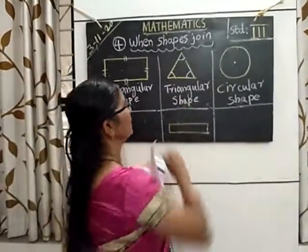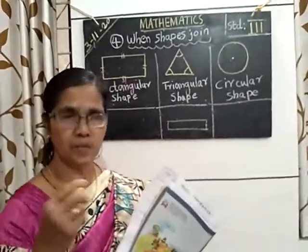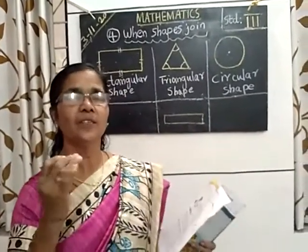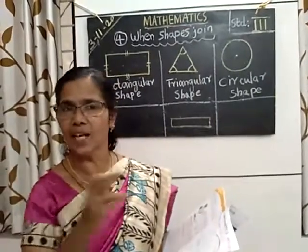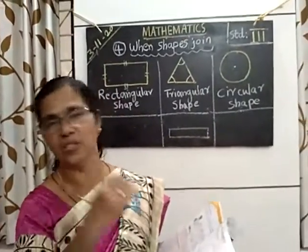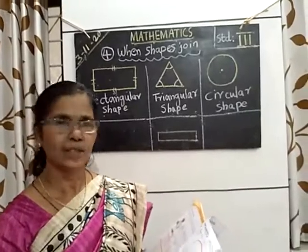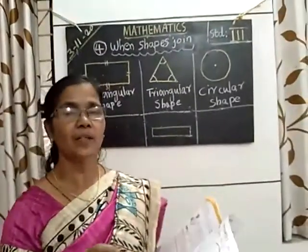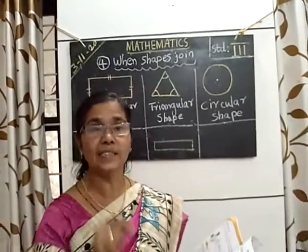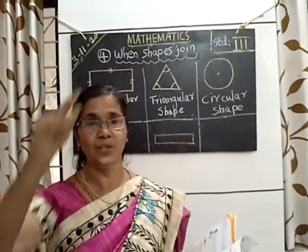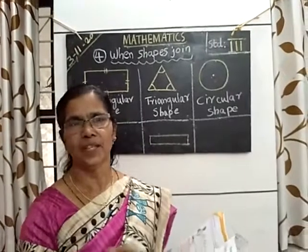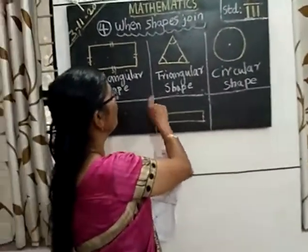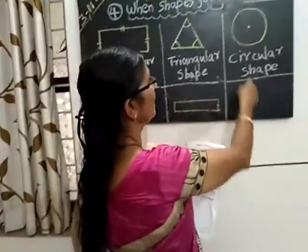Then triangular shape. When you look at a building, you can find out many triangular shapes in between. Have you noticed that? Or when you travel on a road, you can see a sign board like this — that is another triangular shape you can find out. Then, circular shape.